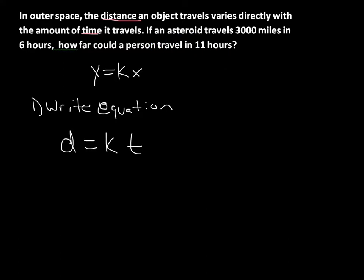In the second sentence, it tells us that an asteroid travels 3,000 miles in 6 hours. So they give us a distance of 3,000 when time is 6. Now we're going to substitute those values of d and t into the original equation so we can solve for k.